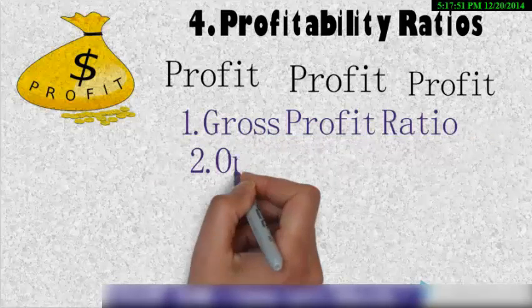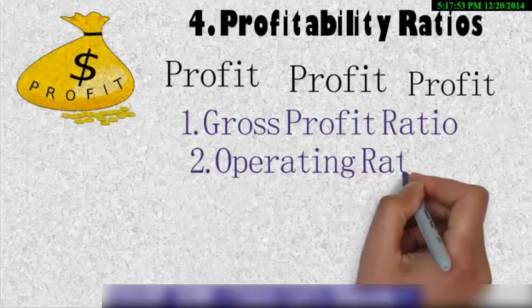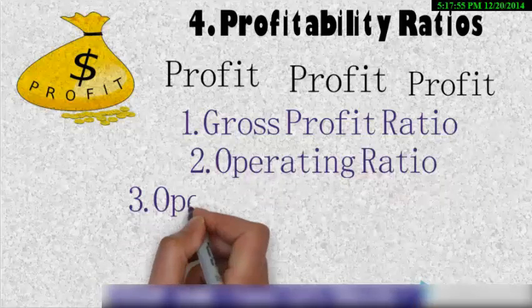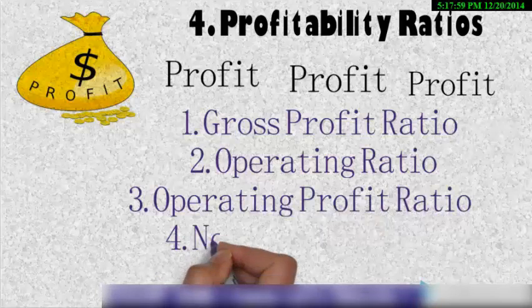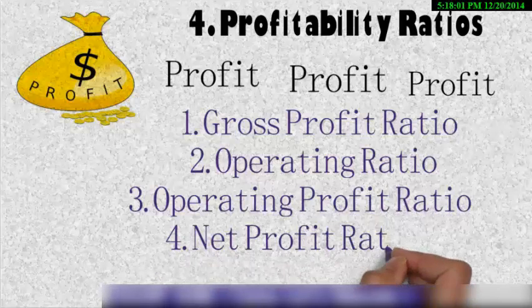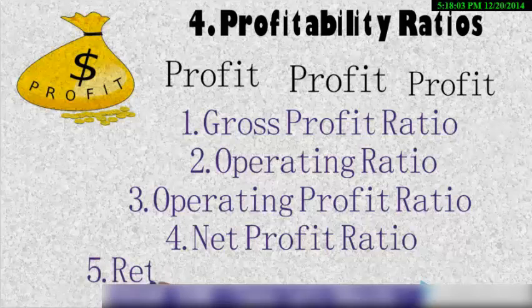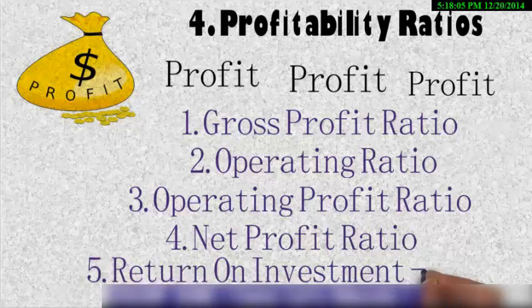Now profitability ratio are of five types: gross profit ratio, operating ratio, the third one is the operating profit ratio, the fourth is net profit ratio and fifth is ROI that is return on investment.